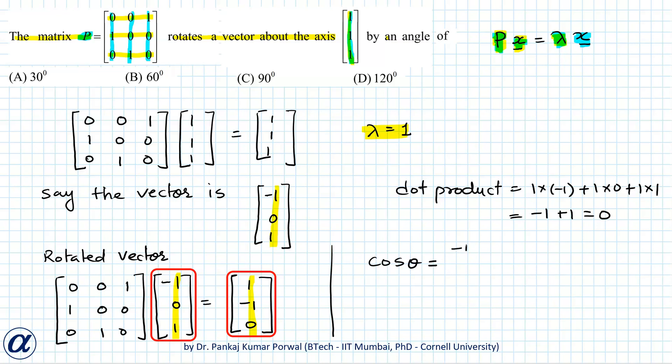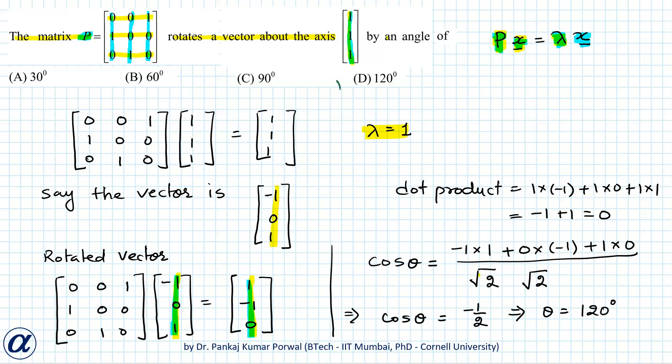So, dot product of these two will be -1 times 1 plus 0 times -1 plus 1 times 0, divided by magnitude of the original vector which is square root of 2 and magnitude of rotated vector is also square root of 2. So this implies cos theta equals -1/2 and that implies theta equals 120 degrees. So our answer D is correct.